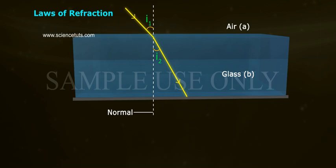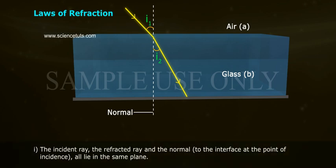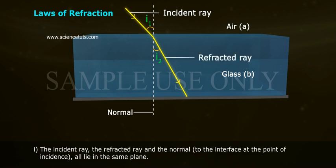Laws of refraction. 1. The incident ray, the refracted ray and the normal to the interface at the point of incidence all lie in the same plane.